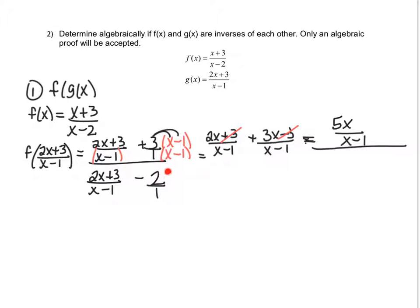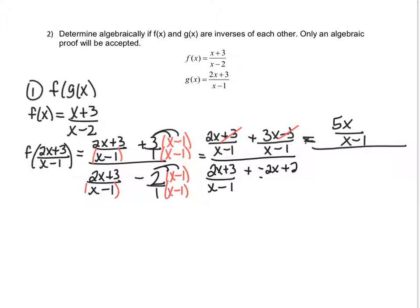Now let's do the same thing with the bottom. We need a common denominator — x minus one is its own thing, so both terms need x minus one. We can rewrite this as two x plus three over x minus one, plus distribute: negative two x plus two over x minus one. The x minus one stays, and let's add our numerators: two x minus two x cancels, and we're left with three plus two, which is five.